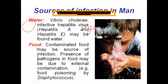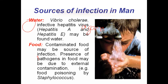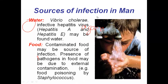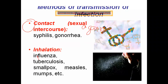Food also acts as a source of infection. When food is contaminated with pathogens, consuming it allows those pathogens to enter the body. Examples of foodborne infections include staphylococcal food poisoning, salmonellosis caused by Salmonella, and botulism caused by Clostridium botulinum.